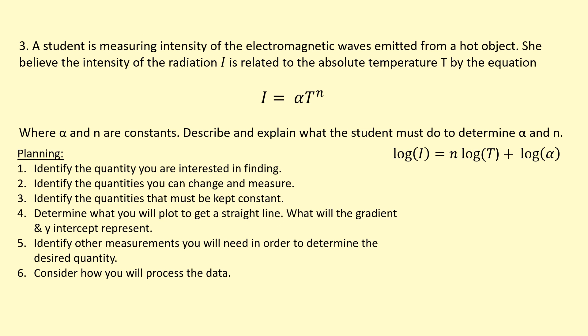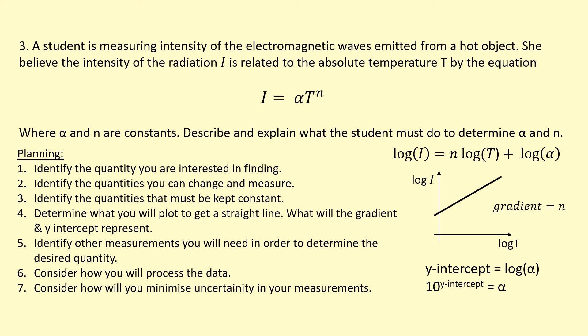I'm going to describe how I'm going to process data. I'm going to plot log I against log T. That's going to give me a straight line with some kind of intercept. The gradient is going to equal N. The Y intercept is going to equal log of alpha. That means if I do log 10 to the power of the Y intercept, because I use log base 10, I will get alpha there. I don't need any other information to analyze this data.